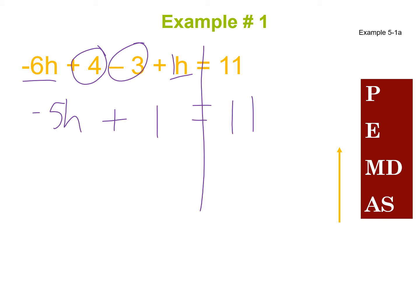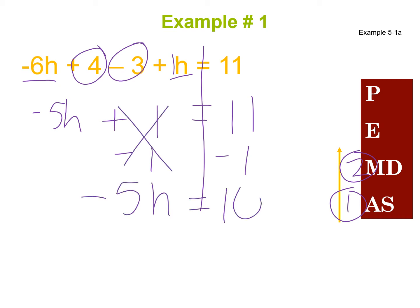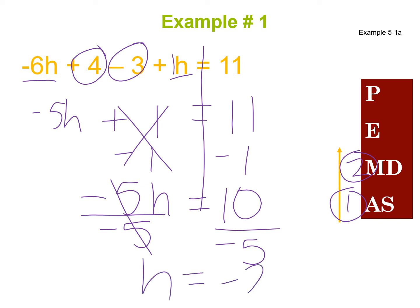We now have a two-step equation to solve for h. We go backwards through the order of operations — first undo adding or subtracting, then undo multiplying or dividing. I have plus 1, so I subtract 1 from both sides. That cancels, giving me negative 5h equals 10. Now I undo the multiplication — negative 5 times h — by dividing both sides by negative 5. Remember to take the sign with it, so h equals negative 2.